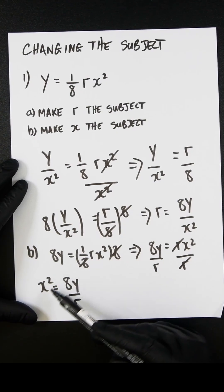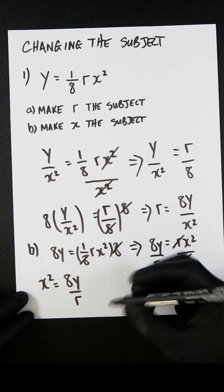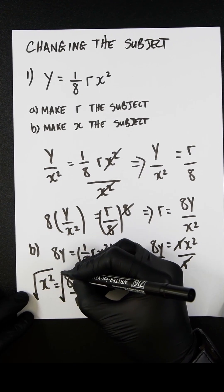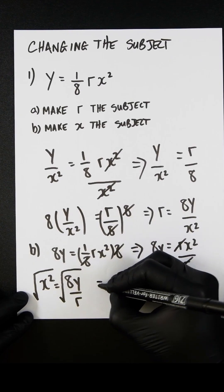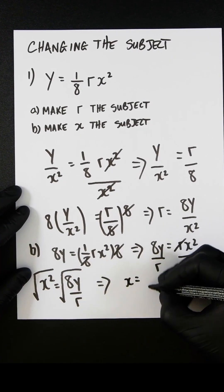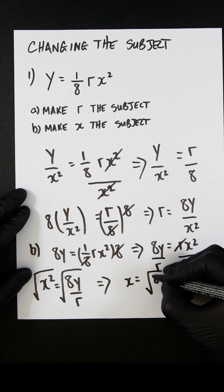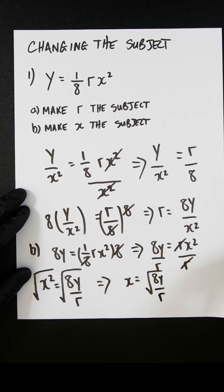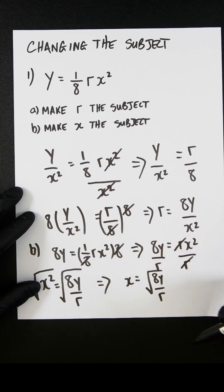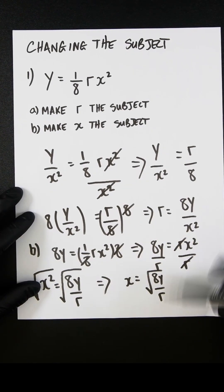So to get rid of this squared, we would just square root both sides. So if we do a square root here and a square root here, this would then become x, which equals the square root of 8y over r. Because the square root of the squared number cancels each other out. So we've now successfully made x the subject.